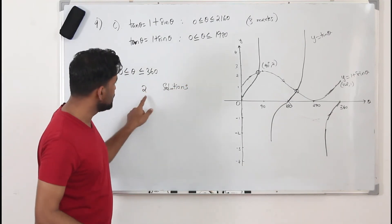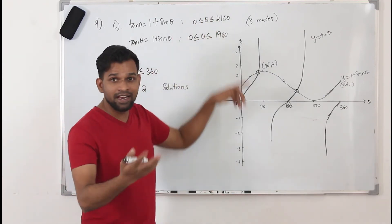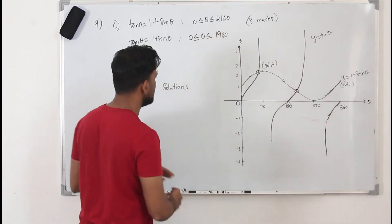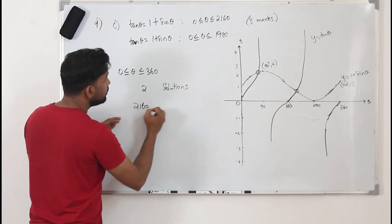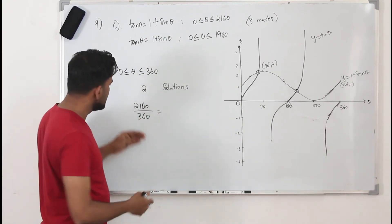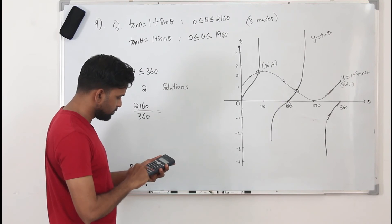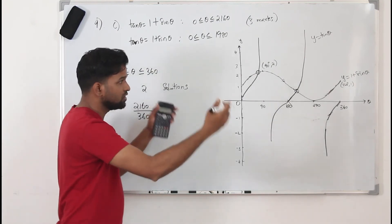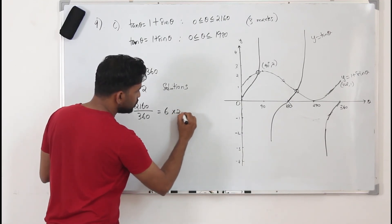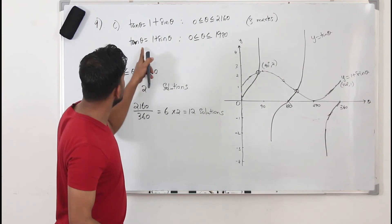Since we have 2 solutions per 360° cycle, we can find the number of solutions for any limit by dividing that limit by 360 and multiplying by 2. For the limit 0 to 2160: 2160 ÷ 360 = 6 portions. Each portion has 2 solutions, so 6 × 2 = 12 solutions.